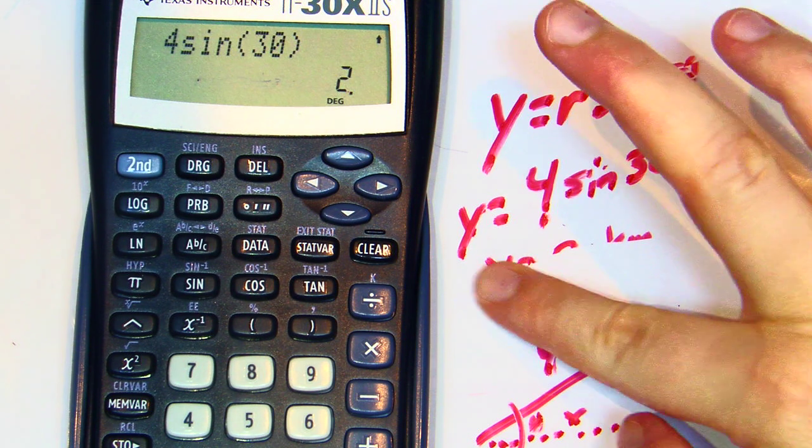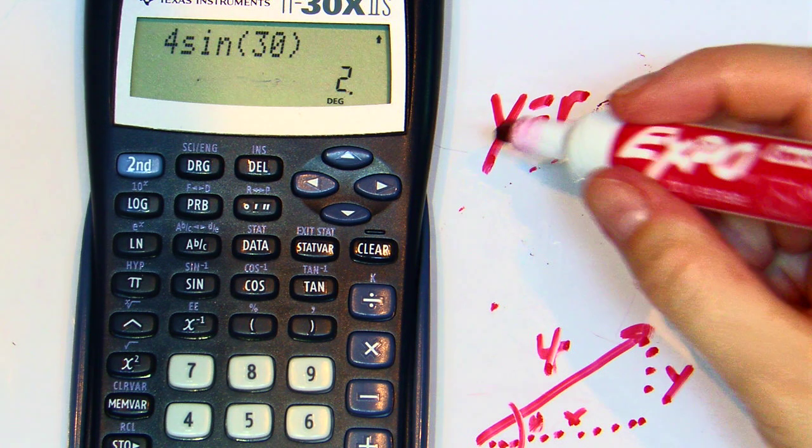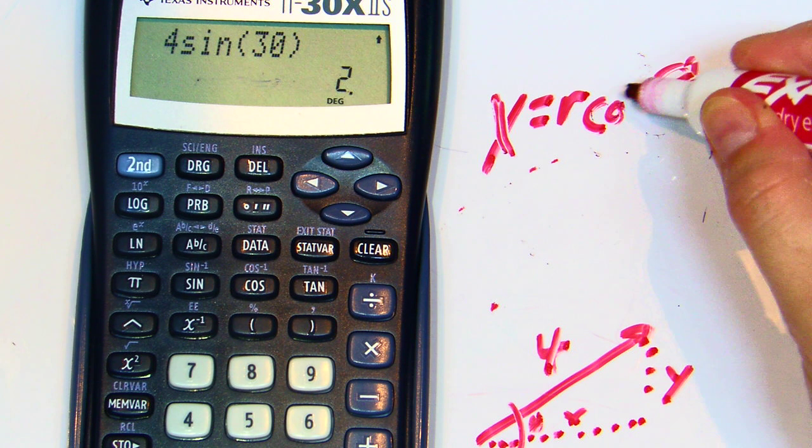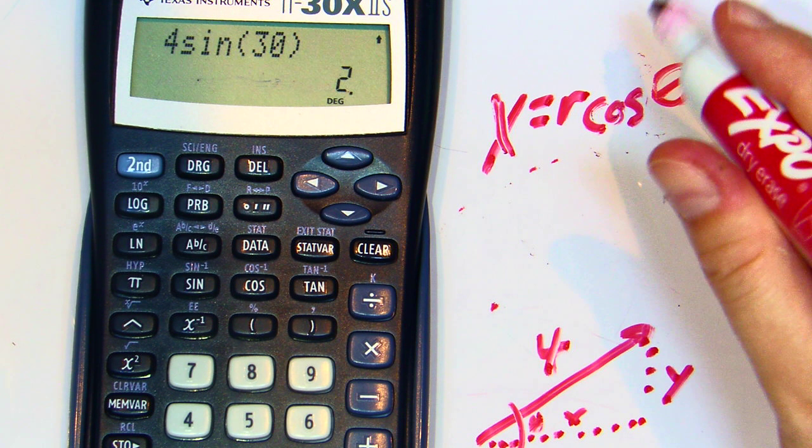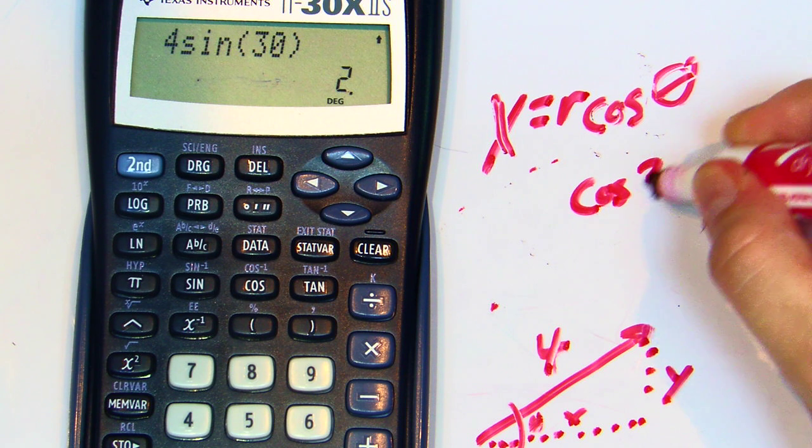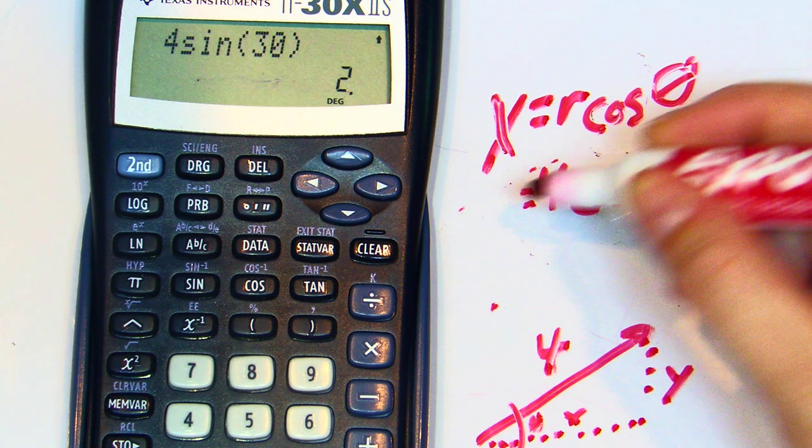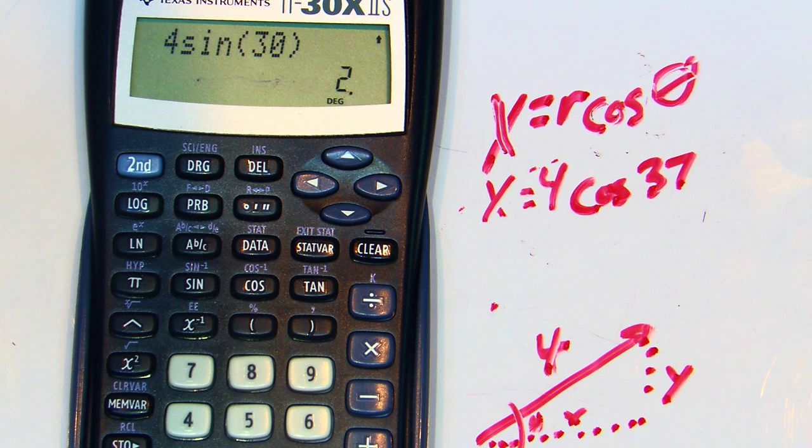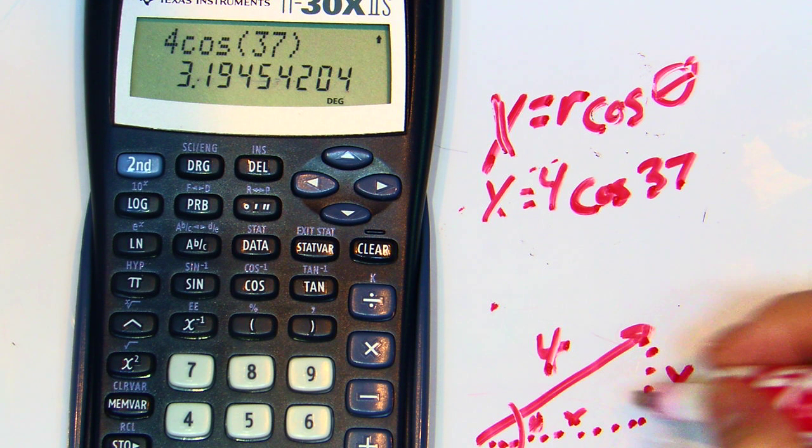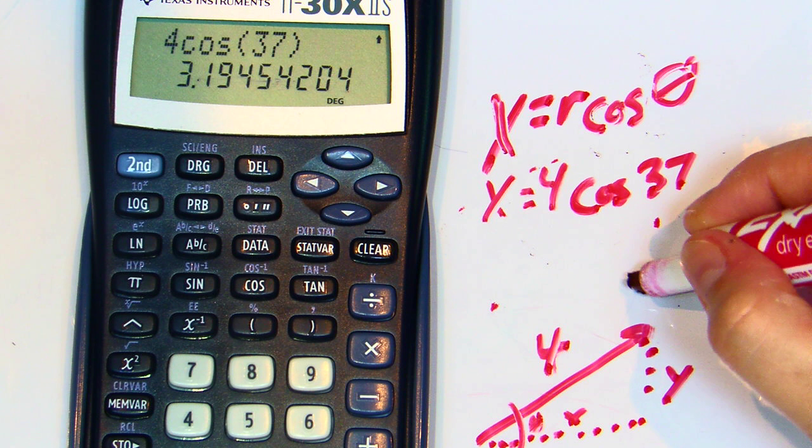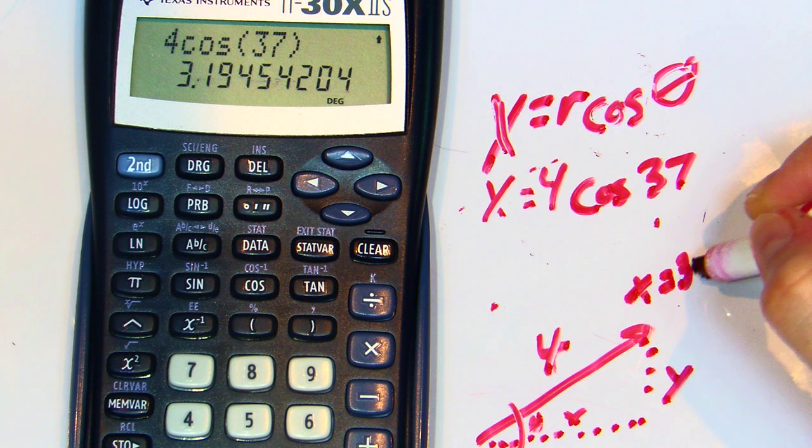And if you want to do the X value, you said X would be equal to the resultant cosine of the theta, of the angle theta. Now, I'm going to change up my angle a little bit. What if it's not 30 degrees? What if it is 37 degrees instead? Still 4. So, X equals 4 kilometers at an angle of 37 degrees. So, 4 cosine 37 degrees. Enter. That will give me an X value of, let's say 3.2 kilometers.